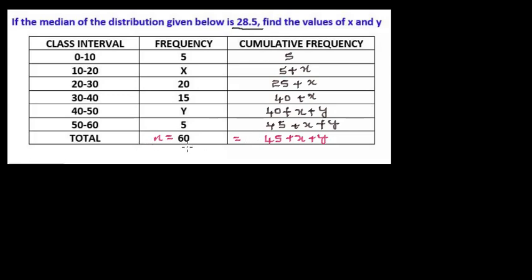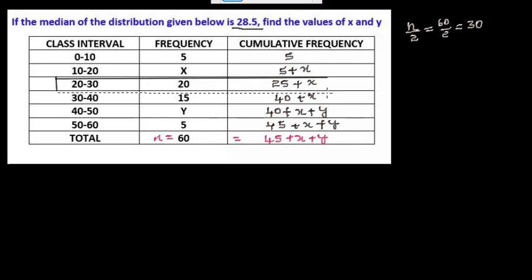Now we know the value of n. n by 2 is 60 divided by 2, which equals 30. To find the median class, we look at the cumulative frequencies. Here we have 25 plus x and 40 plus x. Since adding 5 to 25 gives 30, the median class is 20 to 30.